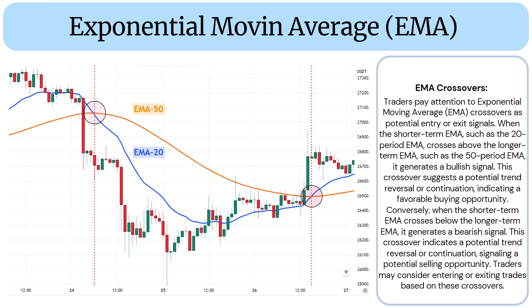Conversely, when the shorter-term EMA crosses below the longer-term EMA, it generates a bearish signal. This crossover indicates a potential trend reversal or continuation, signaling a potential selling opportunity. Traders may consider entering or exiting trades based on these crossovers.